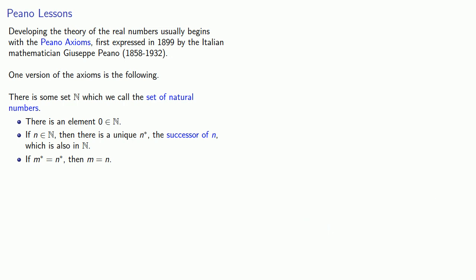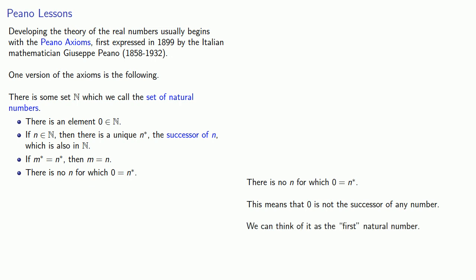Now, while every number has a successor by the second axiom, there is no n for which zero is n*. And this means that zero is not the successor of any number, and we can think about it as the first natural number.